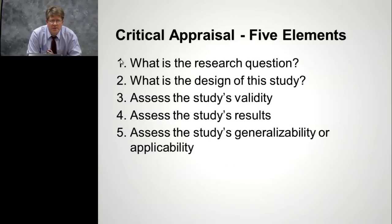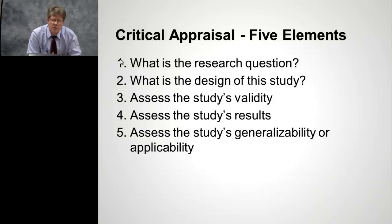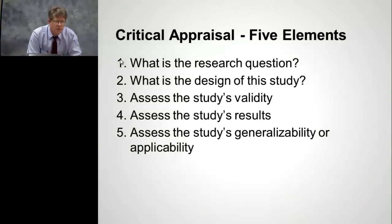Critical appraisal has five elements, and these you should try to think about for every single journal article that you read. So if you get stuck at some point and don't know where to start with an article, remember these five things. The first is: what is the research question? Second is: what is the design of the study? What study design is it — is it a controlled trial, case control, et cetera?